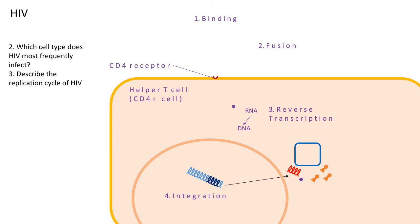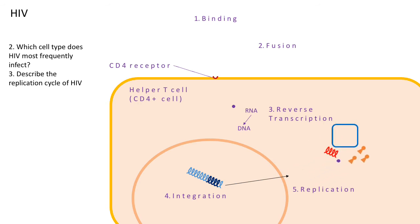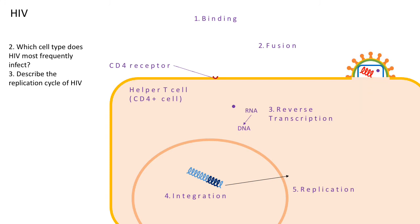The process of making those components is called replication. Those components then move to the membrane where they are assembled. Remember, the viral envelope is actually made from the host cell membrane, so the lipids in the envelope are from the host cell membrane.